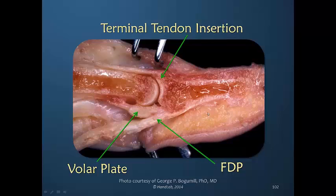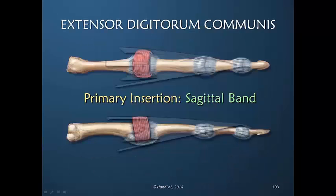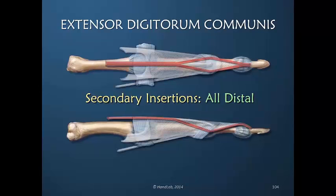Look at how much larger this tendon is and how much larger the area of insertion compared to the dorsal apparatus at that point. So the primary insertion of the extensor digitorum communis is the sagittal band, and all points distal to that are secondary insertions. We cannot say that they are only the insertion of the EDC — they are dorsal apparatus insertions and not just EDC.